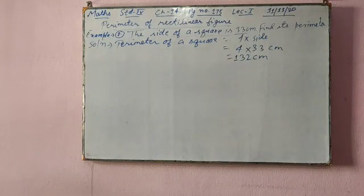4 will remain 4. In the place of side, side is given 33 centimeter. Put 33 and multiply. Here you have to multiply. Now we will move to next question.